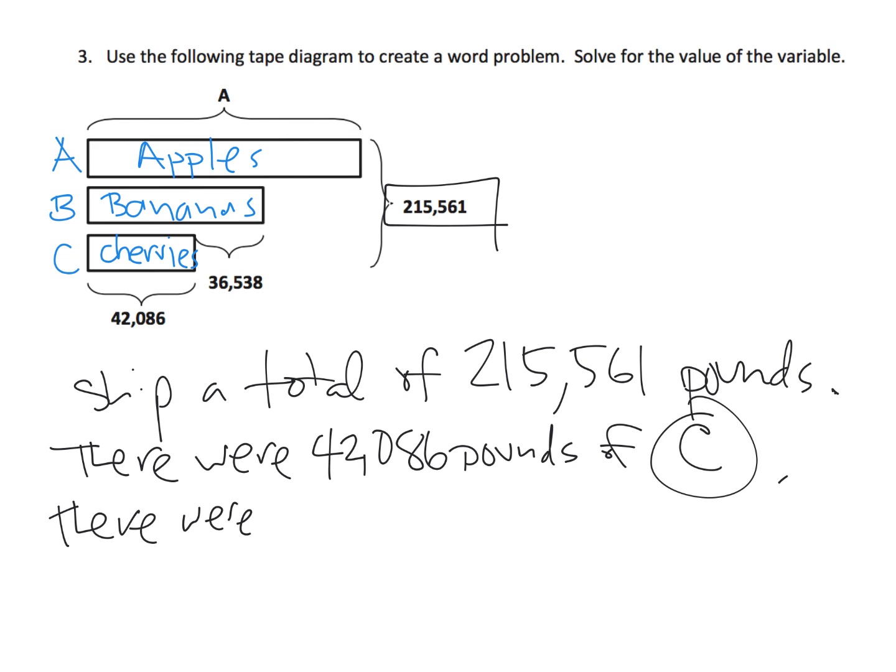No, that's how many pounds, this 36,538 is pounds more than cherries. So the question, the statement would be there were 36,538 pounds more bananas than cherries.